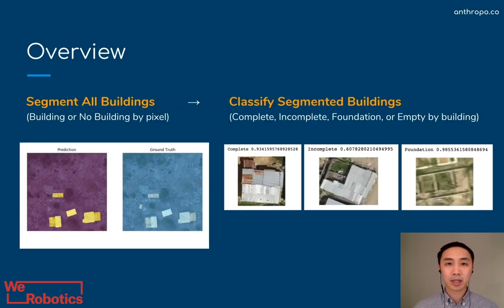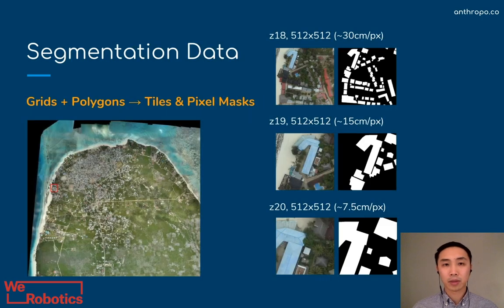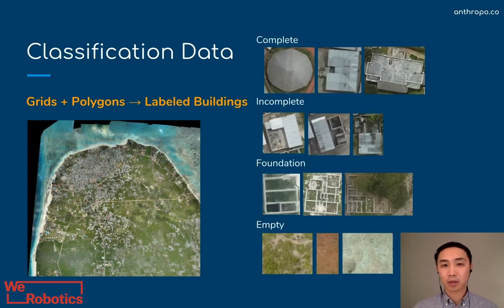Approaching the challenge, we treated it as two distinct tasks: first, a segmentation task to find the buildings, and second, a task to classify the condition of those found buildings. For data preparation, we created training data for segmentation as square tiles along with their pixel masks at three different zoom levels. For classification, we cropped buildings using their polygons into new images and attached labels corresponding to those images.